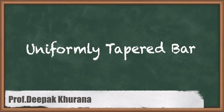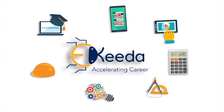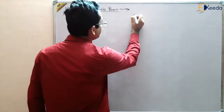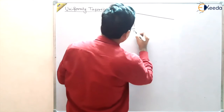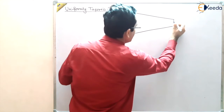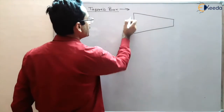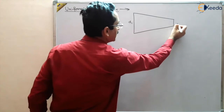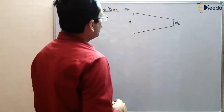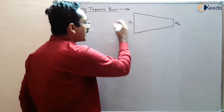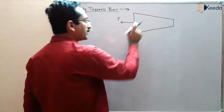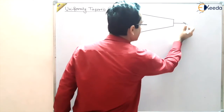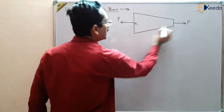How to find out the total elongation in a uniformly tapered bar. We have a bar with diameter D1 that is uniformly tapering — the diameter is uniformly decreasing — and finally the diameter becomes D2. So it is a uniformly tapered bar and we have applied forces P at two ends. For static equilibrium, the same force P is applied at both ends, so the body is in static equilibrium. The diameter at one end is D1 and at the other end is D2.